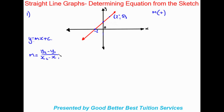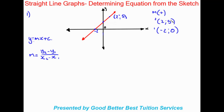Let's identify our points. We're working with (2, 5) and also with (-2, 0). I'll take the second one — it doesn't matter which one you take. We'll make this one point one and this one point two.